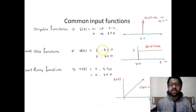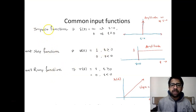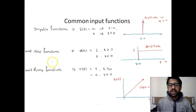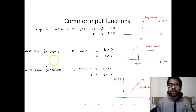The common input functions are basically the impulse function, unit step function, unit ramp function, and also a parabolic function. These input functions are termed as general functions because they are used to test newly made systems and obtain outputs which are really useful while we characterize the system.